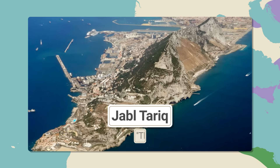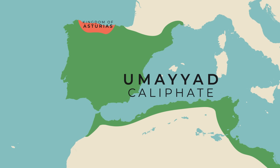By 720, almost all of Hispania was under the nominal control of the Umayyad caliph all the way back in Damascus. However, there was still a pocket of Christian resistance left on the Iberian peninsula to the north. Here, a group of Christians revolted against the Umayyads and formed their independent kingdom of Asturias. The Umayyads were unable to destroy this kingdom and it kept prospering in the mountains, away from the control of the caliphate.